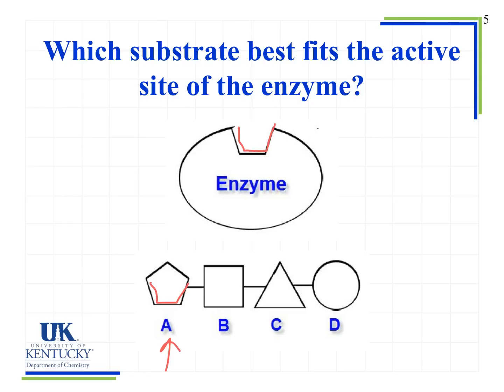This is why enzymes are very specific to a particular reaction. One way our body controls the rates of reactions and whether to produce more or less of something is by controlling the amount of enzyme available. Without enzymes, these reactions happen very, very slowly; we need enzymes for reactions to occur at a rate sustainable to life.